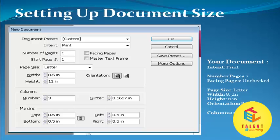Here your document settings are: intent print, number of pages one, facing page unchecked. Page size letter, width 8.5 inch, height 11 inch, orientation portrait, columns 3.